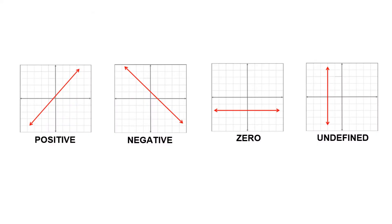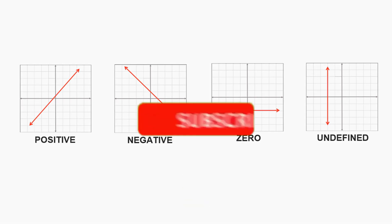Let us now summarize the different slopes we have obtained. If the direction of the line on the graph is going to the right, the slope is positive. If the direction is going to the left, the slope is negative. If the line is horizontal, the slope is 0. And if the line is vertical, the slope is undefined.